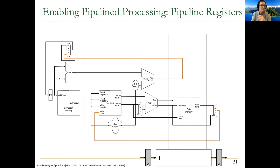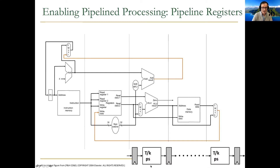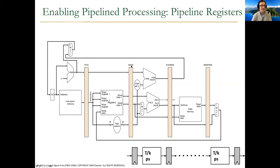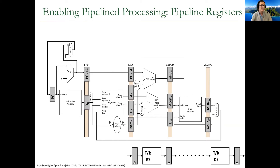To enable pipeline processing, we need to add pipeline registers between stages. Starting from the single-cycle microarchitecture divided into k=5 stages, we add pipeline registers named by the stages they connect: IF/ID, ID/EX, EX/MEM, and MEM/WB. At the end of each stage, all results needed by later stages must be latched into these registers. The IF/ID register holds the fetched instruction and PC+4. The ID/EX register stores register-read data, the sign-extended immediate, and PC+4. The EX/MEM register holds the ALU result and write data for stores. The MEM/WB register holds memory data and ALU result.